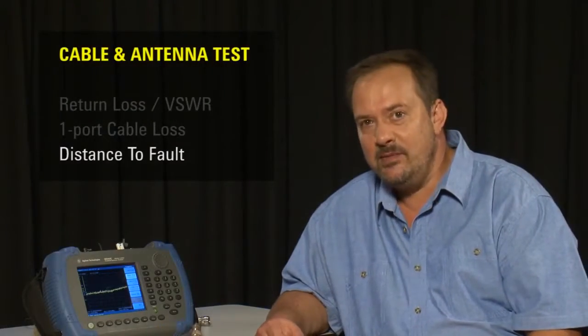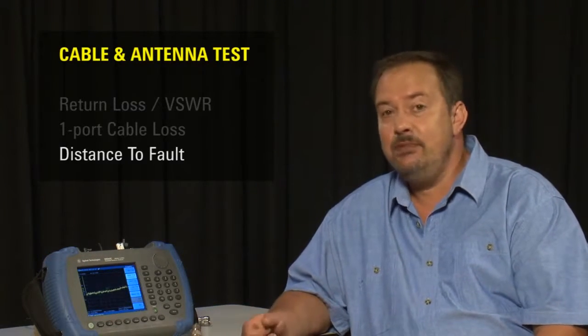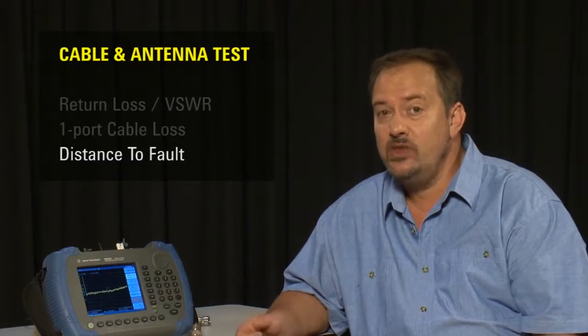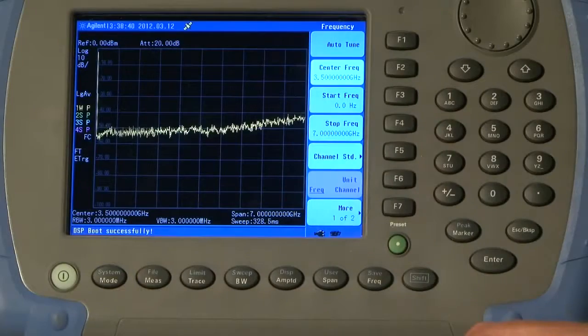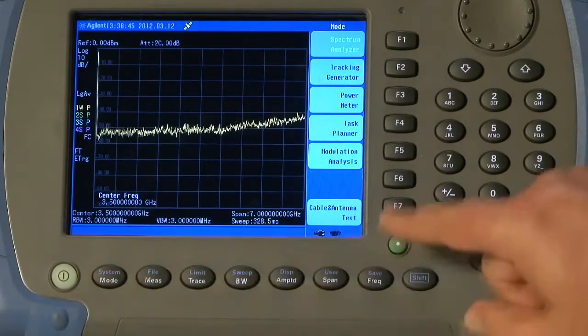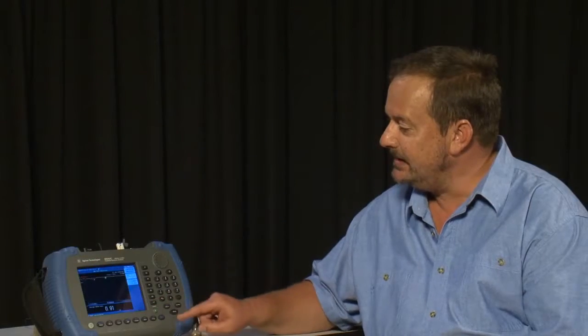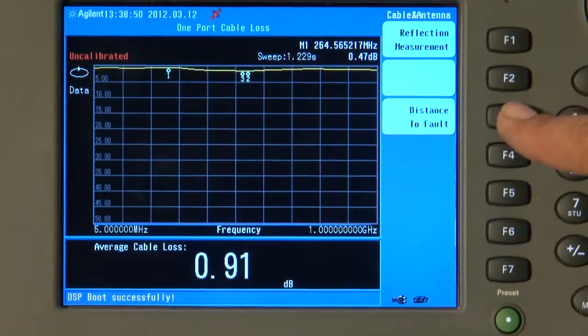Now let us make a distance to fault measurement of the same cable. With this we can identify the physical distance to cable breaks, cable damage, damaged connectors, water ingress and the like. So let us press the instrument preset button, mode, select cable and antenna test, and this time I am going to select the measurement of distance to fault.